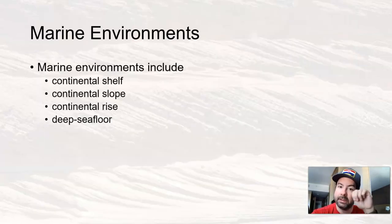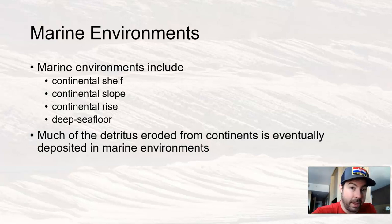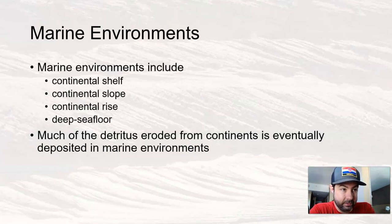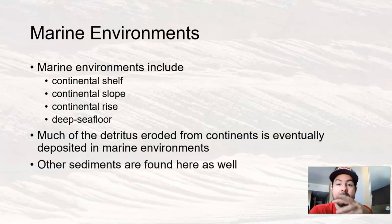These include areas on the continental shelf, the continental slope, the continental rise, and the deep sea floor. Much of the detritus — solid, clastic pieces of sediment — eroded from continents is eventually deposited in marine environments. The vast majority of sedimentary rocks you're looking at probably indicates some sort of marine deposition; the sediment was deposited in the ocean. Much of the detritus eroded from the continents via streams or other processes eventually flows out into the marine environments.